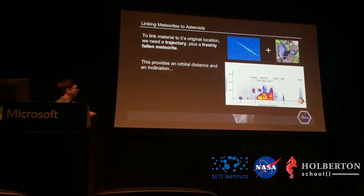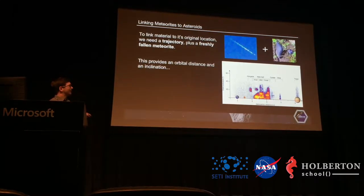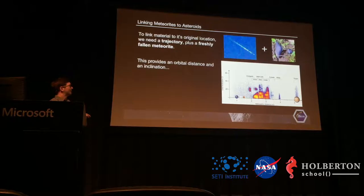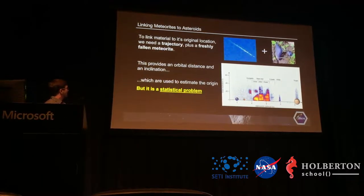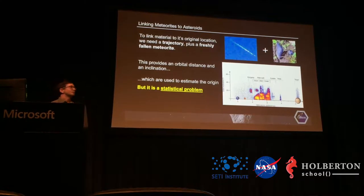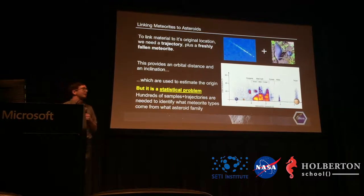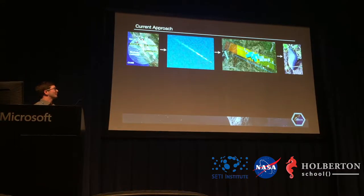From the trajectory you'll also be able to get an inclination, and based on that you can point to some group that would have fed it into a certain Kirkwood gap, which would give it the resonance to eventually expand its orbit so that it would be Earth-crossing. But this is a statistical problem — you can't just have one sample and one trajectory.